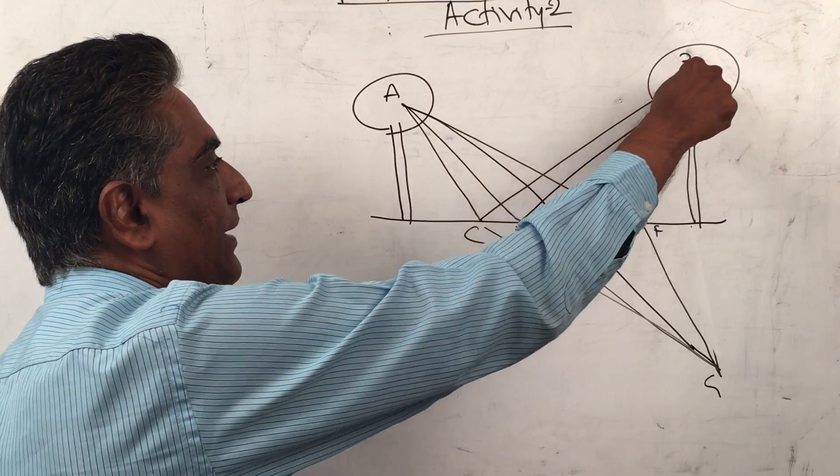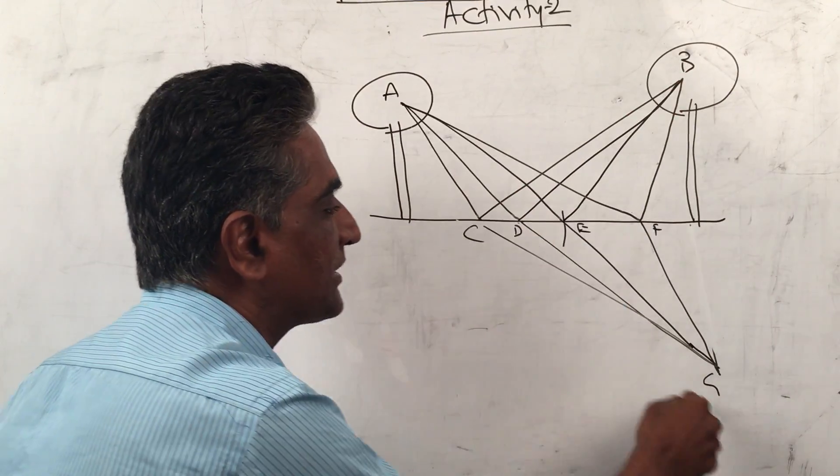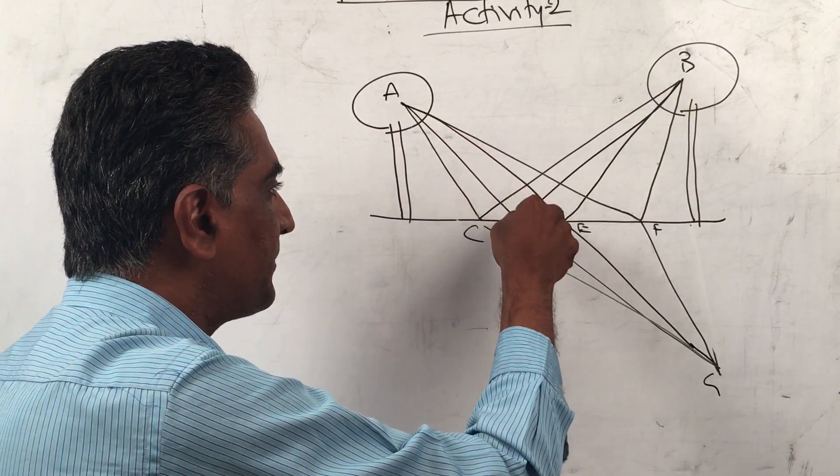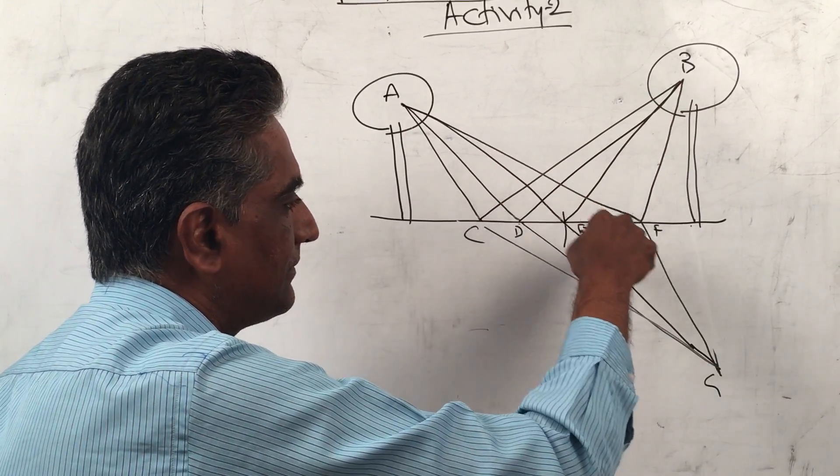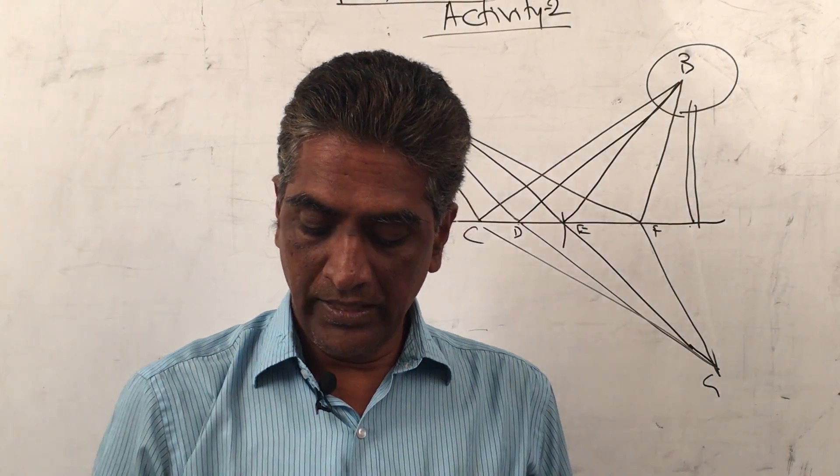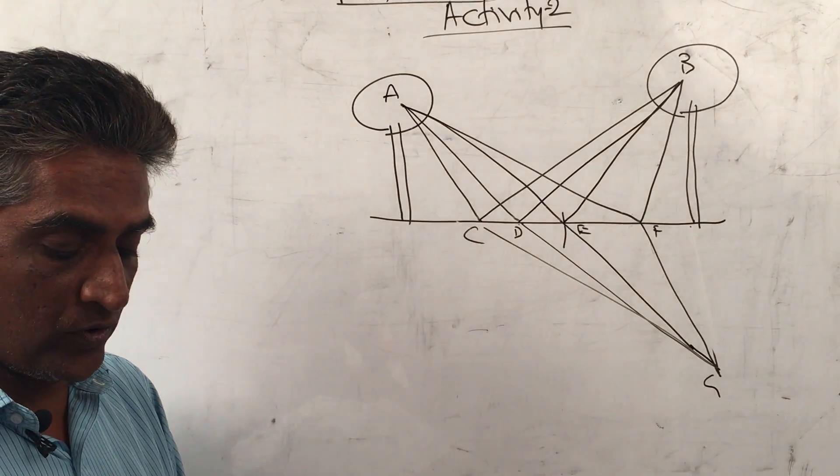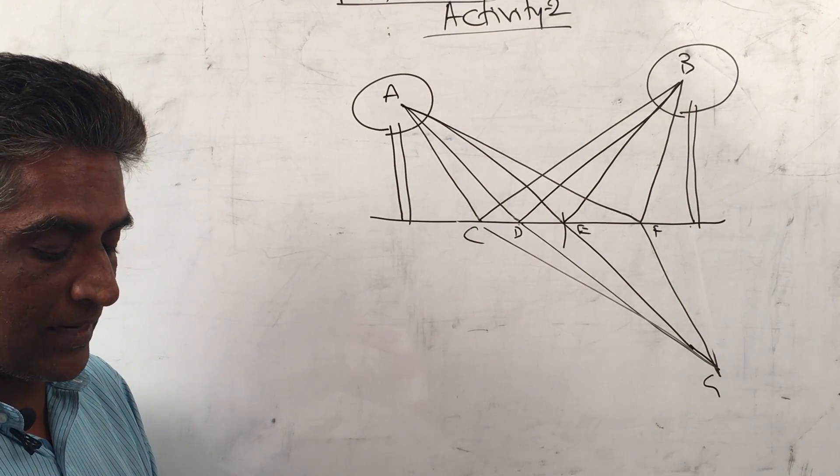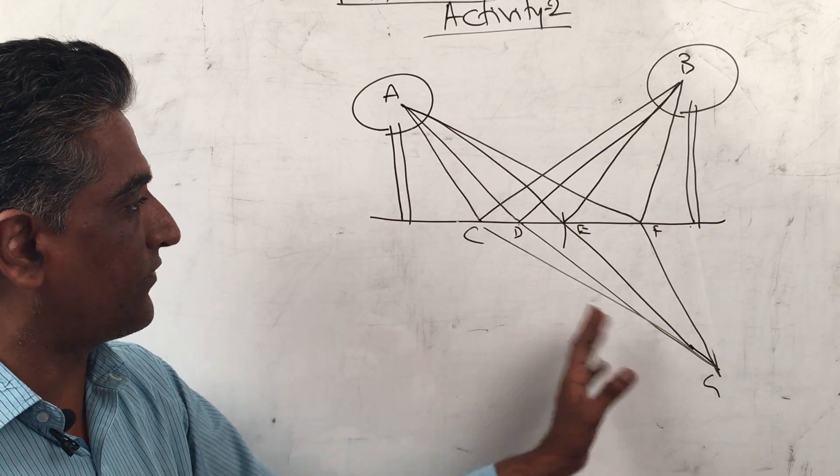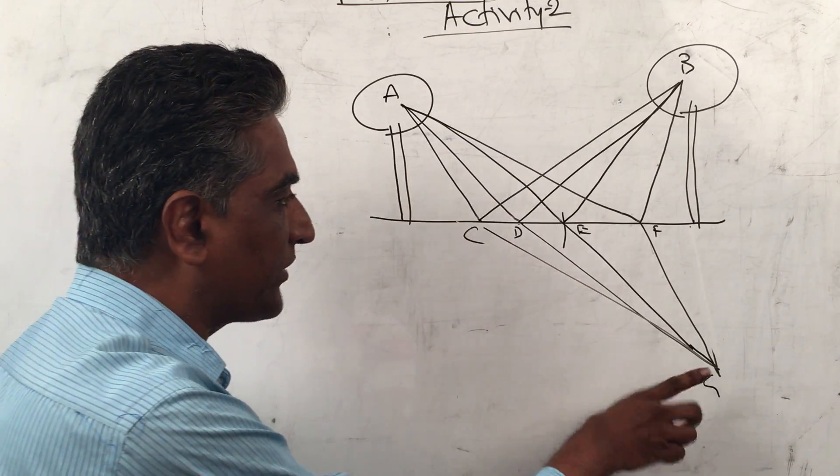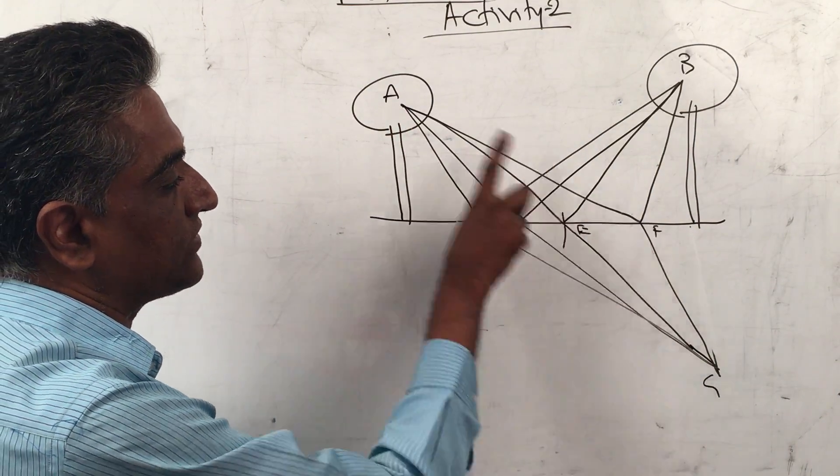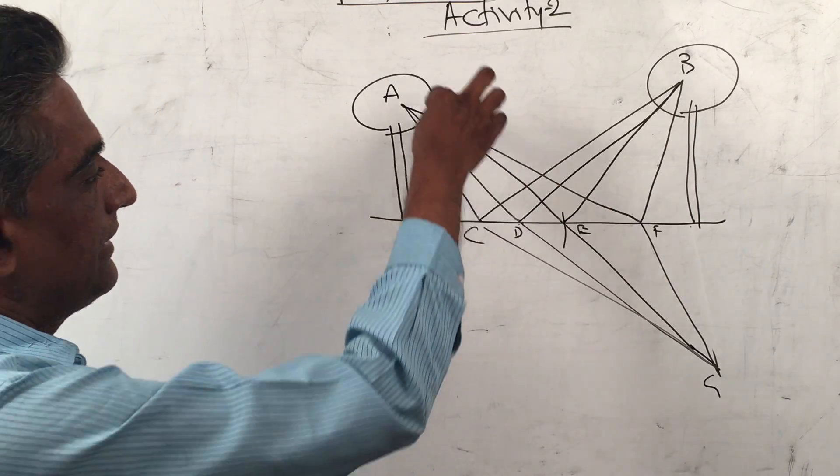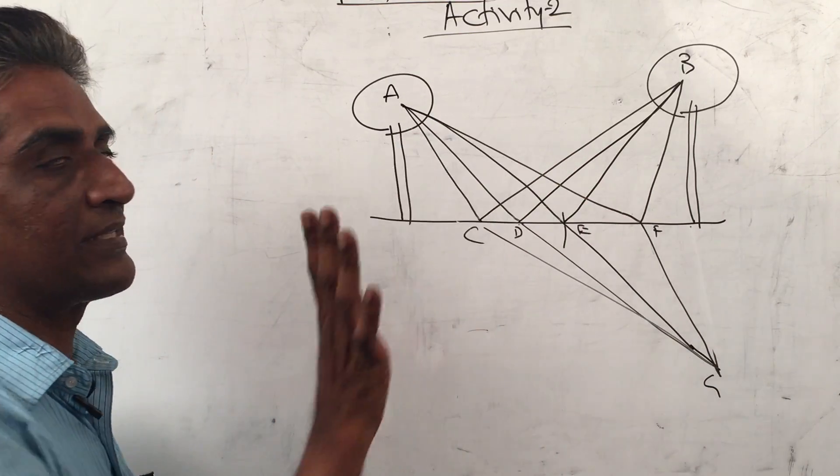Instead of taking this path which we want, we took this path, this path, and this path. If you observe this figure carefully, you will notice that among the path ACG, ADG, AEG, and AFG, we have to only find out which is shortest. It is clear this is a straight line distance, so it is the shortest.